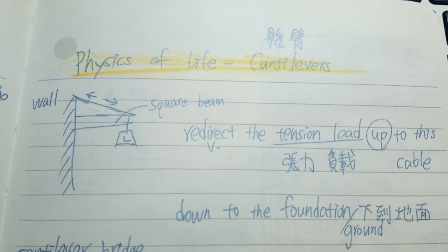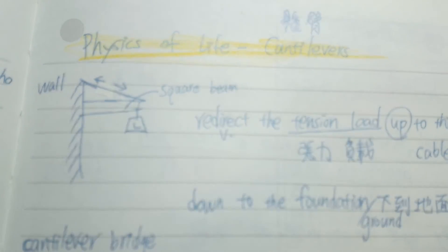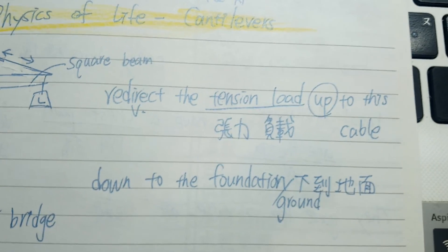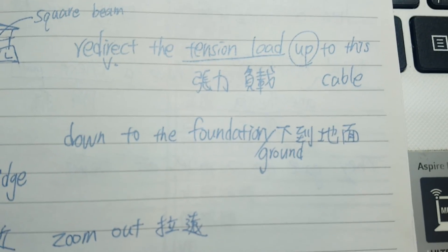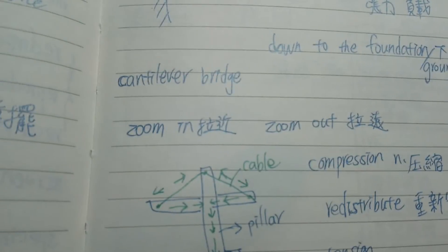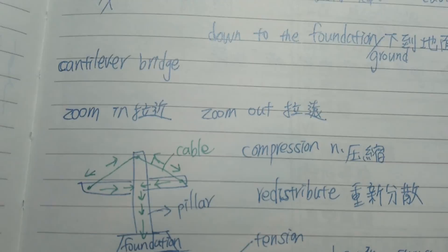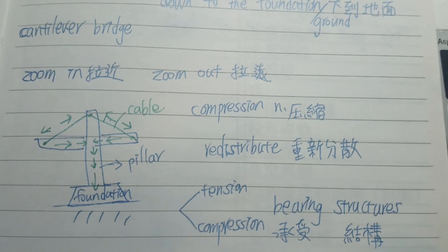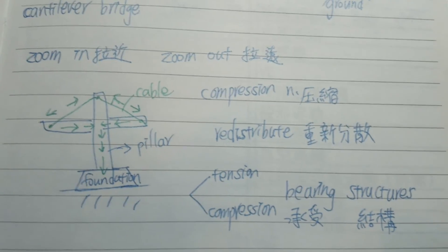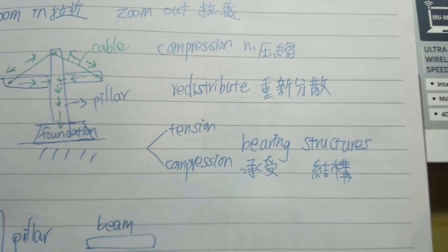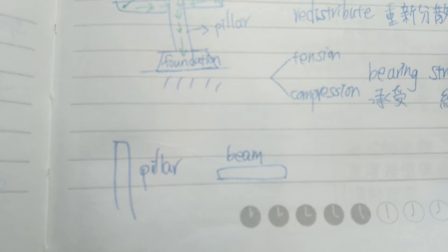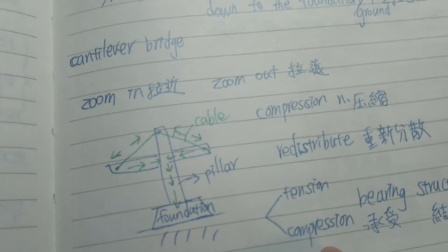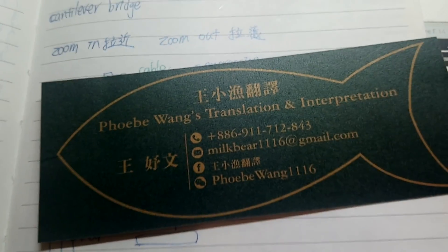Vocabulary,字彙. Physics of life,物理人生. Cantilevers. 懸臂,wall,牆壁, Square, 方形的橫梁. Redirect the tension load up to this cable. 重新把這個張力的負載往上,然後到這個纜線的部分. Down to the foundation ground. 往下到它的基底還有地面. Cantilever bridge. 懸臂橋梁. Zoom in,拉近. Zoom out,拉遠. Compression,壓縮, redistribute. Redistribute. 重新分散. Cable,纜線, Pillar,柱子. Tension, compression bearing structure. 張力還有壓縮力的承受結構. Pillar,beam. 一個是直的,一個是橫的. 它們都是柱子啦. 然後我覺得是橫梁. 好,我是王小瑜翻譯,今天講的是懸臂,感謝您今天的收看,我們下次再會。